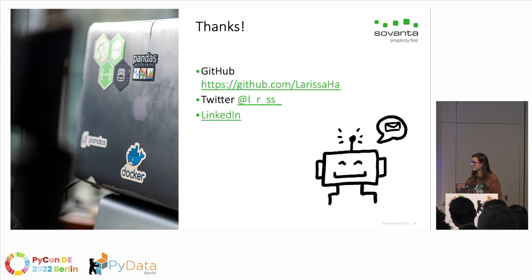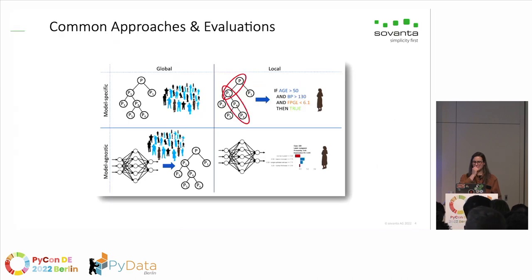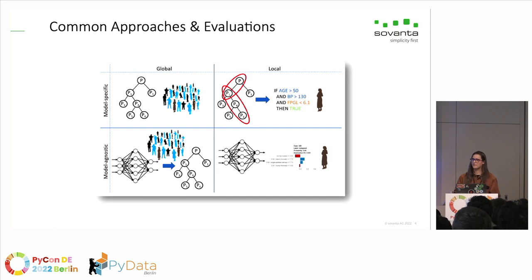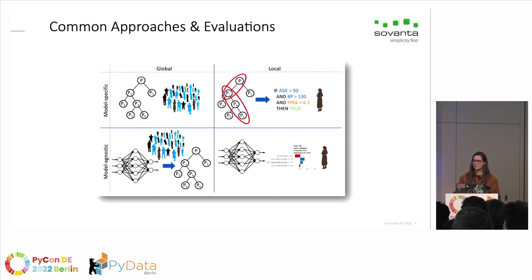Another question: could you explain the difference between local and global explainability like I'm five? Imagine you have a group of people and a model that predicts the first letter of your name. With global explainability, you can explain the prediction for each person in the group. With local explainability, you pick one person and explain why the model predicted a name starting with A — but you don't know about the others. Global explainability is usually a lot more computationally costly.